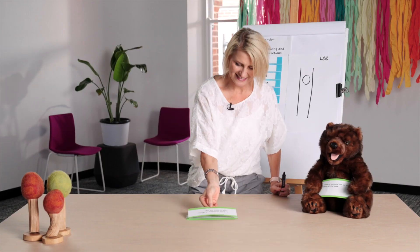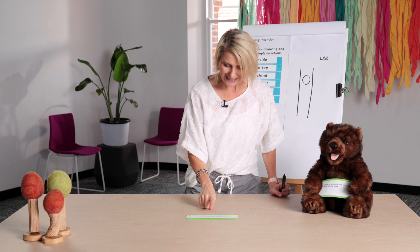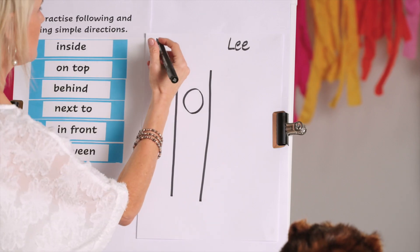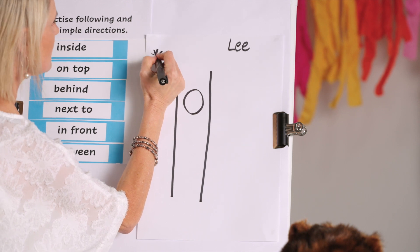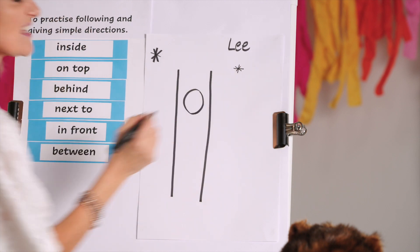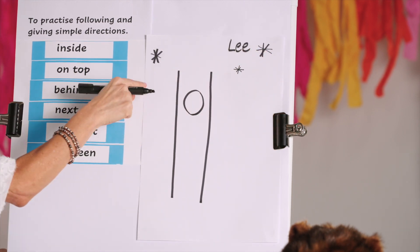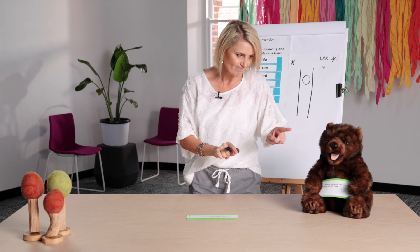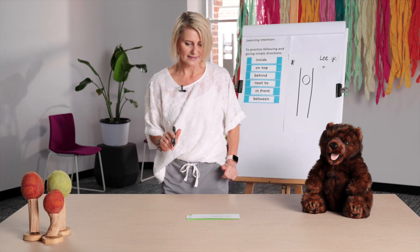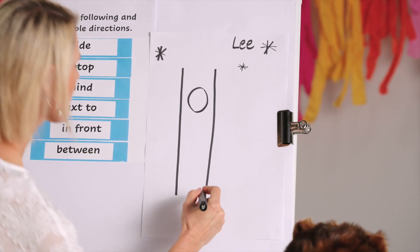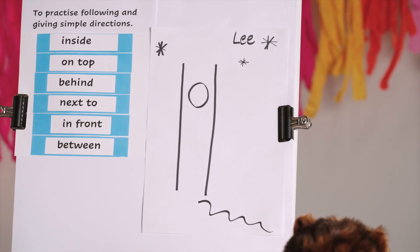Number four: draw three stars of different sizes on top of the page. Three stars, different sizes, on top of the page. Here's one star, I might do a little star because that's a different size, and another one here. One, two, three — on top of the page, different sizes. Good instructions. Last one: draw a squiggly line at the bottom of the page. A squiggly line at the bottom. There we go.